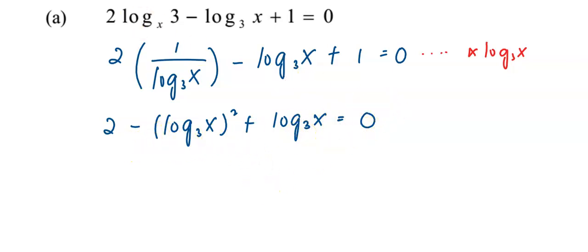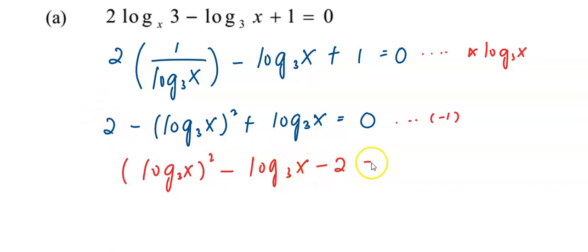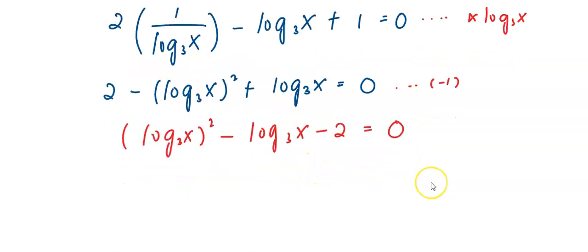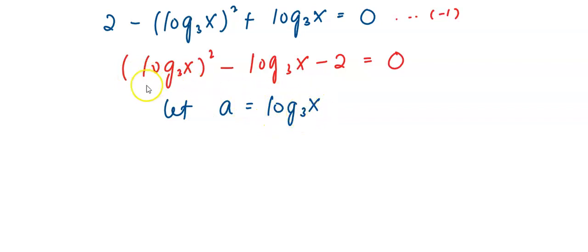I will multiply all the terms by negative 1 so that the log base 3 of x squared term becomes positive. This gives negative log base 3 of x, and 2 becomes negative 2, equals 0. After that, I will substitute — I'll take a to represent log base 3 of x. So my equation will become a squared minus a minus 2 equals 0.